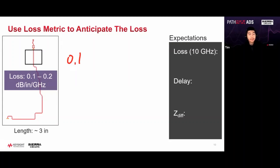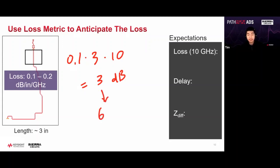Looking at 10 GHz on the right, that gives about 3 dB of loss. At 0.2 dB/inch/GHz, the loss goes from 3 dB up to 6 dB. So we can clearly see that we're going to expect 3 to 6 dB of loss — as annotated on the right.